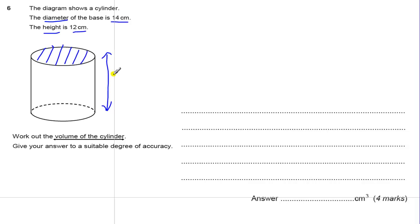We know the height is 12. Now, to work out the end of the prism, we're going to realize that's a circle and we're told the diameter of the circle is 14 cm.